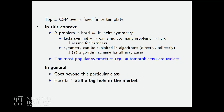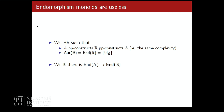Why are endomorphisms useless? Two reasons. First, for each structure there is another structure called the core — with constants added — such that they mutually PP-construct each other, and the core has trivial endomorphism monoid. Second, this homomorphism order is trivial in groups, because there is always a homomorphism between monoids. So endomorphisms are a different kind of math — perpendicular to model theory. This studies asymmetries.